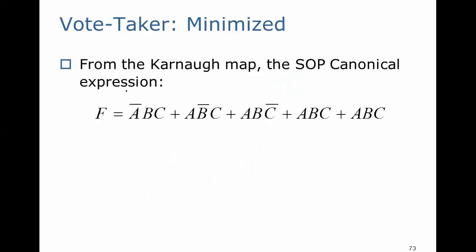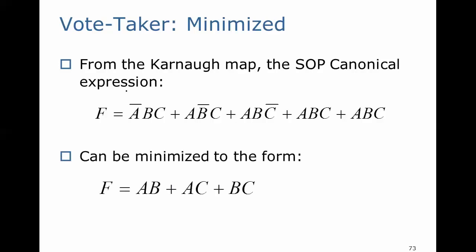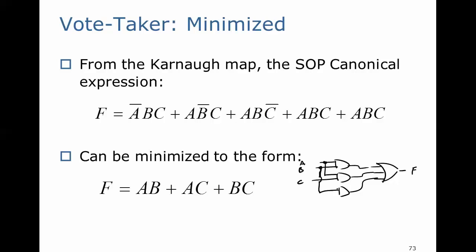So from the Karnaugh map, the sum of products canonical expression can be minimized to the form AB plus AC plus BC. Those three terms correspond to the three pairs of cells we circled in our Karnaugh map. To implement this, we would have an OR gate with three inputs and three AND gates — A and B for the first, A and C for the second, and B and C for the third.